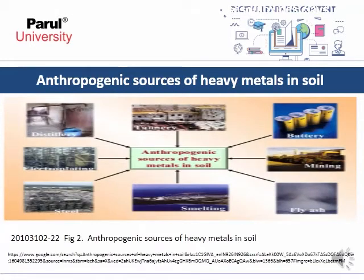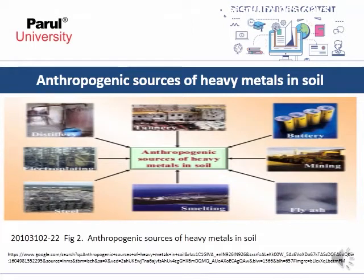Anthropogenic sources of heavy metals in soil include distilleries, electroplating, steel industry, battery manufacturing, mining, smelting, and related industries. All these industries produce heavy metals that accumulate in soil, and when humans consume food grown in contaminated soil, there are serious health consequences.